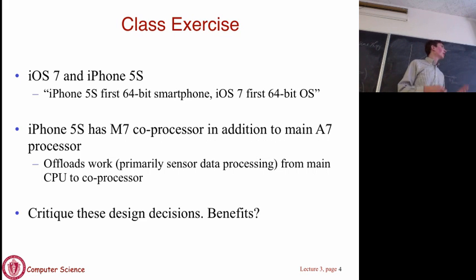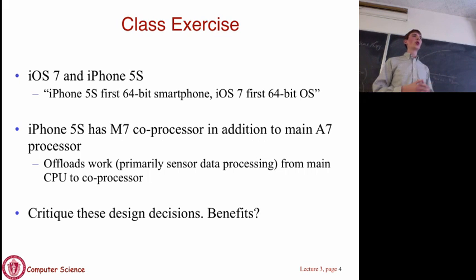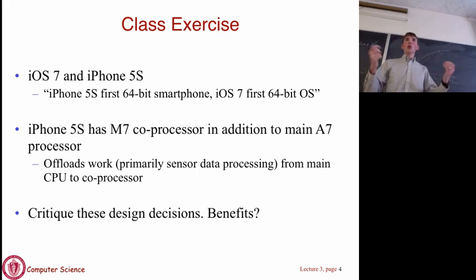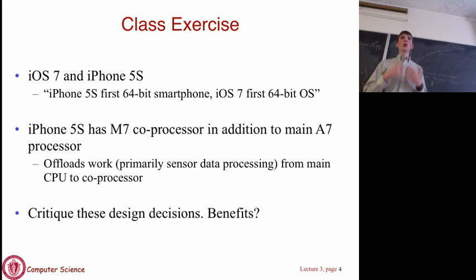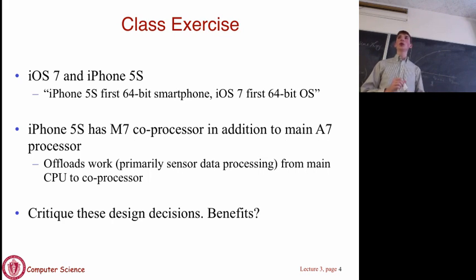Apple released their brand new iPhone 5S along with iOS 7, and they had a couple of headline features they really focused on. The iPhone 5S was the first 64-bit smartphone, and iOS 7 was the first 64-bit OS. What might be an advantage of having a 64-bit OS on your phone?